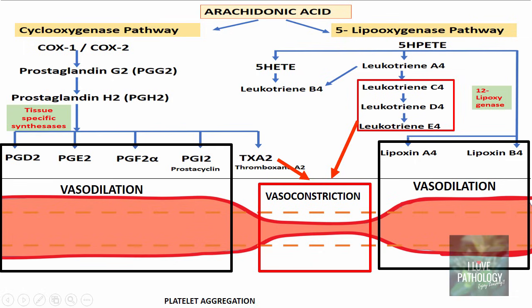Apart from vasodilation and vasoconstriction, there are other effects as well. One of these is platelet aggregation — these mediators can either inhibit or promote platelet aggregation. Prostacyclin (PGI2) is the one which inhibits platelet aggregation, whereas thromboxane A2 is the one which promotes platelet aggregation.